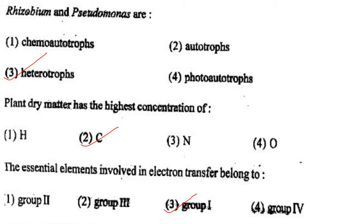Next one: Rhizobium and Pseudomonas are option 1, chemo autotrophs; option 2, autotrophs; option 3, heterotrophs; option 4, photo autotrophs. Answer is option 3: heterotrophs.